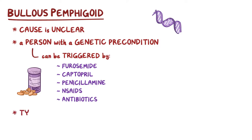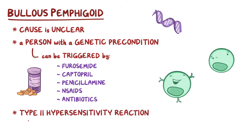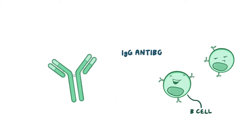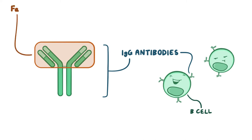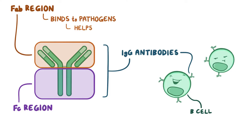Bullous pemphigoid is a type 2 hypersensitivity reaction, which is when the immune system produces antibodies that bind to the body's own cells. Immune cells called B cells produce IgG antibodies, which are Y-shaped molecules with two regions: an antigen-binding fragment region, or FAB region, and a fragment-crystallizable region, or FC region. The FAB region of the antibody binds to pathogens, which helps other immune cells destroy those pathogens.